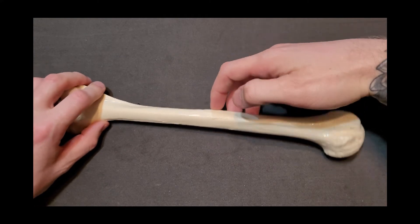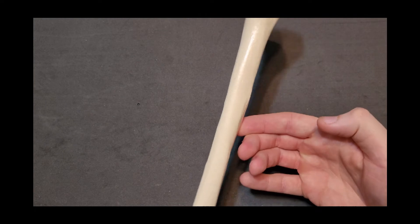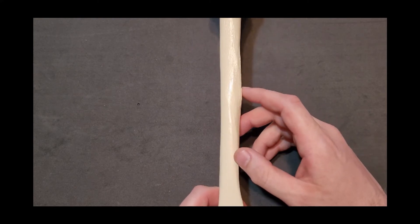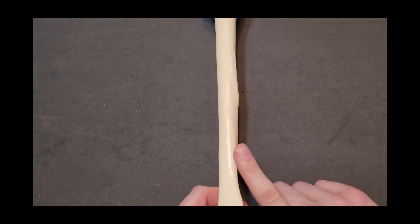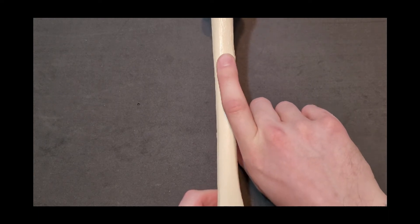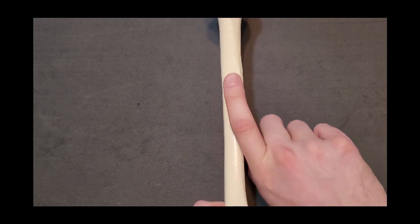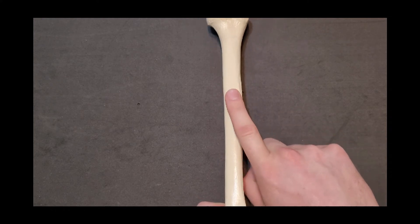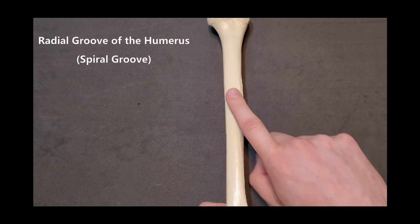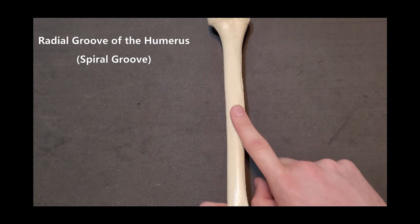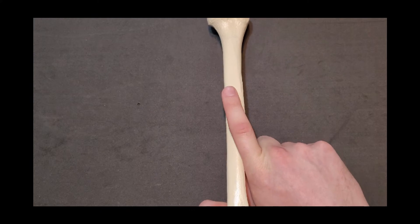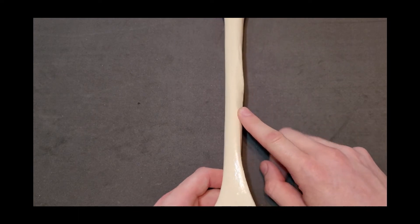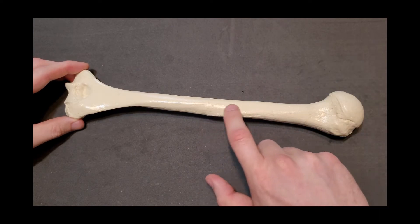Rotating to the posterior view and looking in that same midshaft region, there's a very shallow groove — almost a line — running along the bone. This is the radial groove, also called the spiral groove because it spirals around the humerus. It runs from proximal and medial heading inferiorly and laterally, and carries the radial nerve.